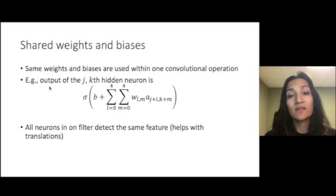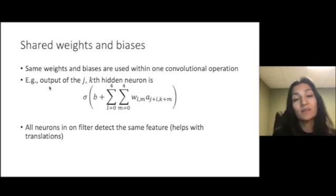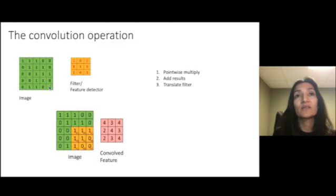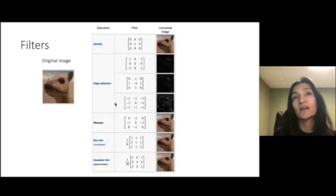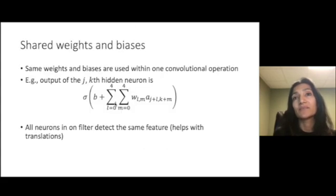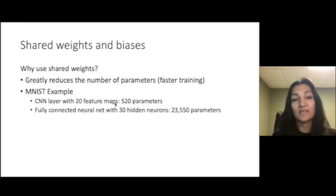So, convolutions, I'll reiterate, are implemented with shared weights and shared biases. So in order to slide over the image and perform the same operation again, what we need is these neurons have the same weights as these neurons and effectively perform the same operation. So, all neurons on the filter detect the same feature, but with translations.